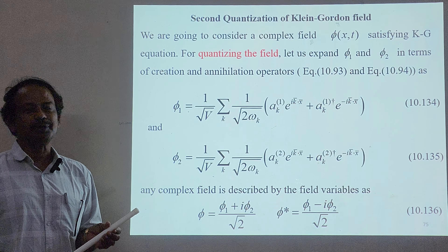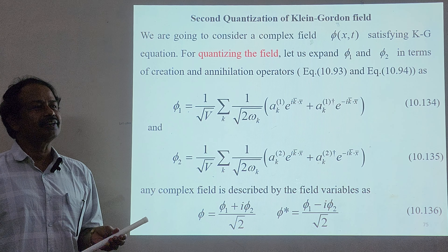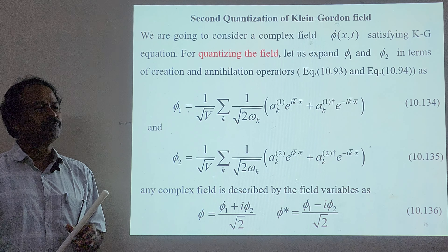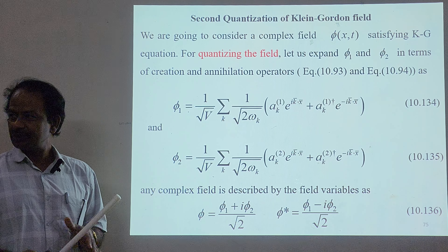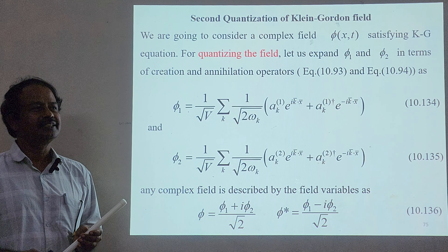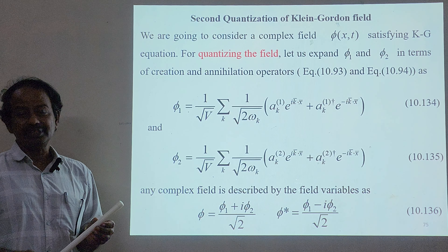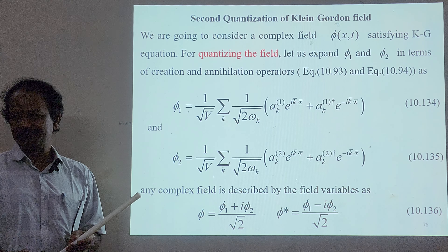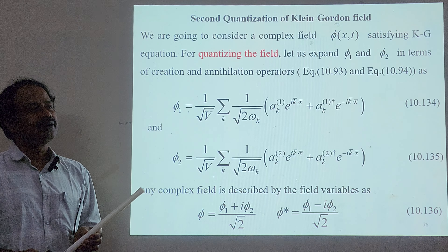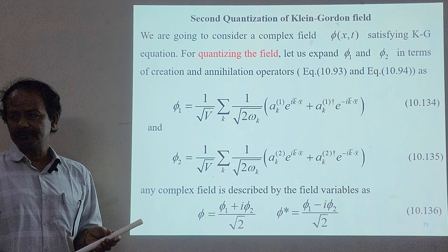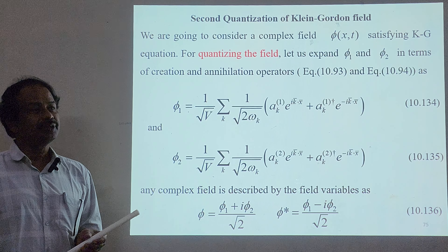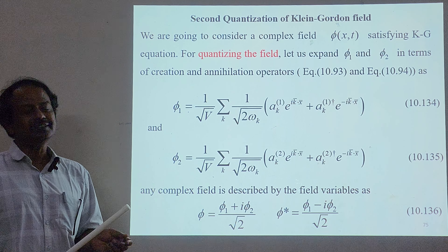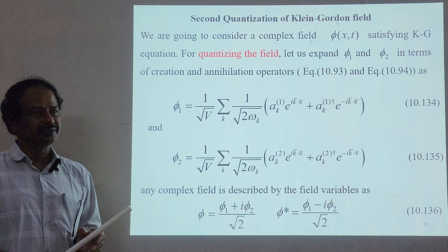We know that only positive probability exists. When calculating any probability, it should lie between 0 and 1 and never be negative. To eliminate the discrepancy of negative probability, we are going to quantize the field. We will use the modified Klein-Gordon equation and quantize the field in order to eliminate the negative probability.